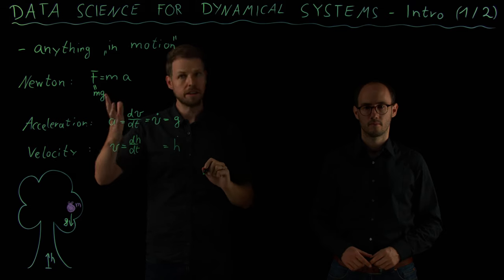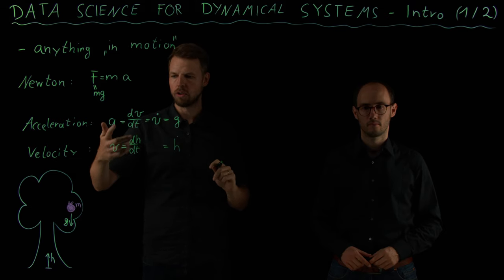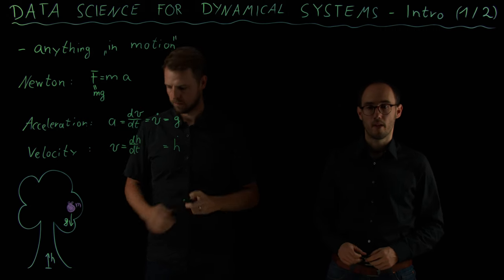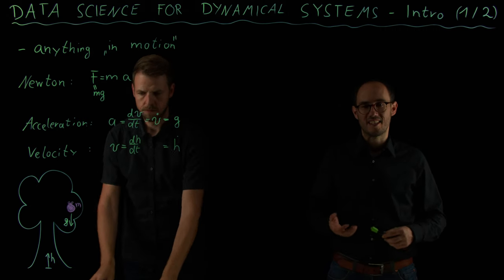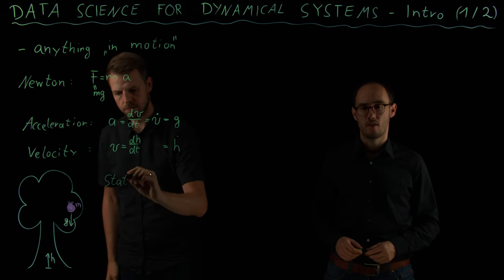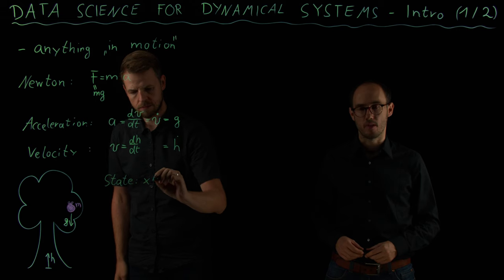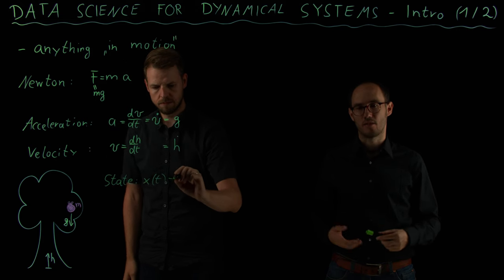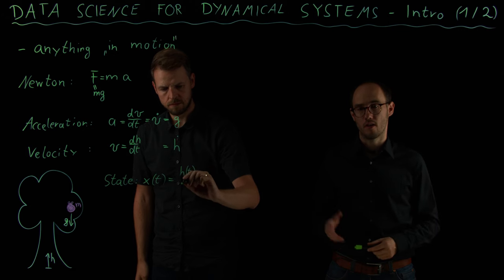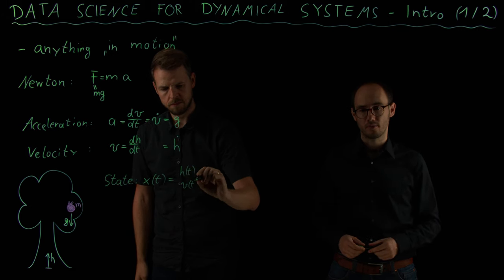Now, these two quantities are really important to describe the system behavior. That's why we call this the so-called state of the system, which is denoted in our nomenclature as x of t. So the important quantity describing the dynamics, the things which are in motion of our Newton's apple model.